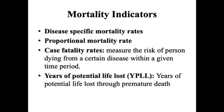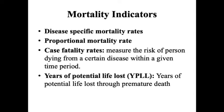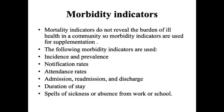Years of potential life lost (YPLL) refers to years lost through premature death. For example, if you were supposed to die at 75 years but died at 30 years, you lost 45 years of potential life. Mortality indicators alone do not reveal the full burden of ill health in the community.